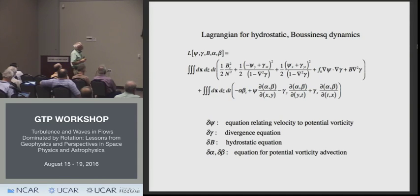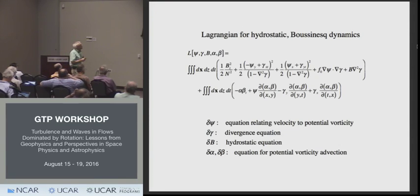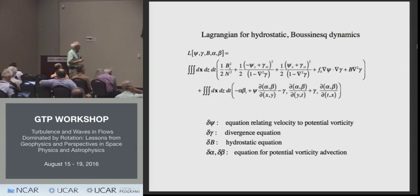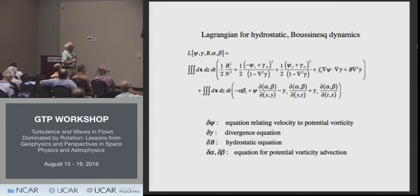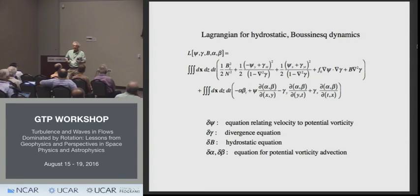From the variation of the stream function, you get an equation relating velocity to potential vorticity in general. Varying gamma gives the divergence equation. Varying the Bernoulli function gives the hydrostatic equation. Varying alpha or eta gives advection of potential vorticity. To get from this full Lagrangian to the final result, you take these five variables and divide them all up into slow and fast parts.